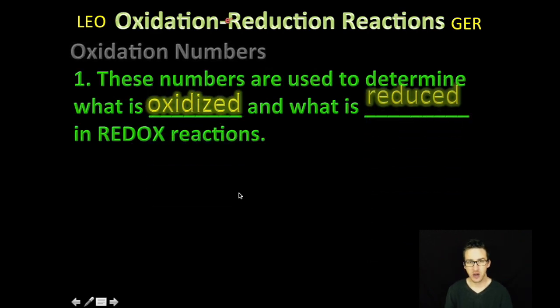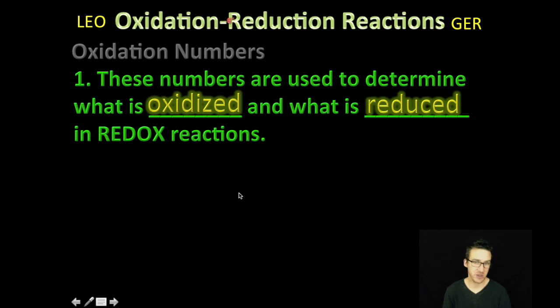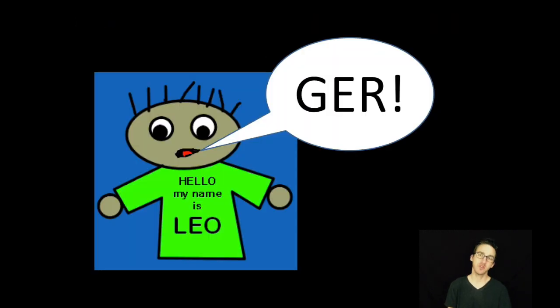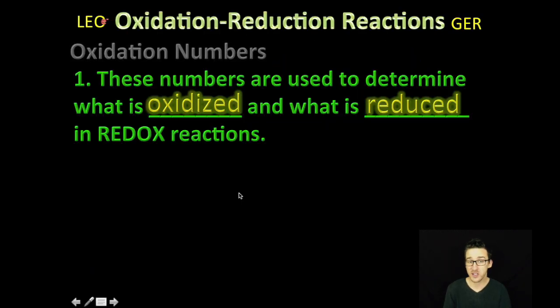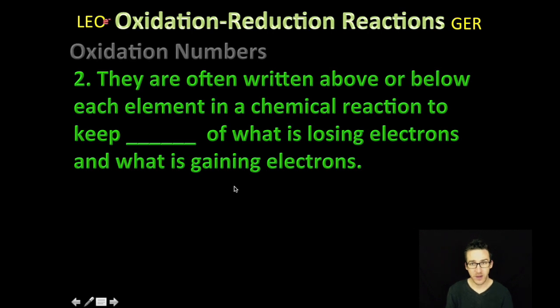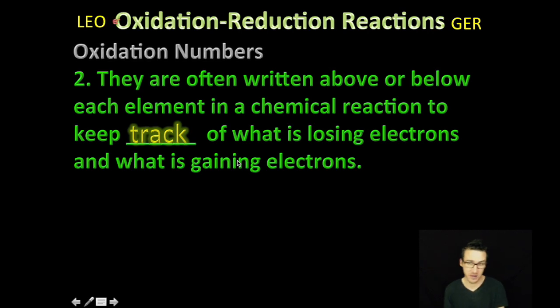So, we're going to use these oxidation numbers to determine essentially what is oxidized. In other words, what is losing electrons, and what is reduced. Or what is gaining electrons in a redox reaction. Now, we often write them above or below each of the elements in a chemical reaction, sort of just to keep track of what is going on. What is losing electrons? What is gaining electrons? Bah! I lost an electron! Are you positive? Oh man.